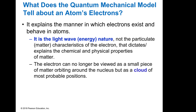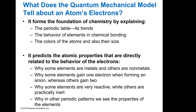The quantum mechanical model tells us how electrons exist and behave in atoms. One of the ways it's described is by using an energy or light wave instead of the particulate characteristics of the electron. Electrons do have matter, but it's super, super small relative to a proton or neutron. So we don't look at the electron as a little dot revolving around the nucleus — it's in a cloud where it could be found, or the probability of it being found. This forms the foundation of chemistry because it helps us understand the periodic table, how elements behave when bonding, and the colors and sizes of atoms.